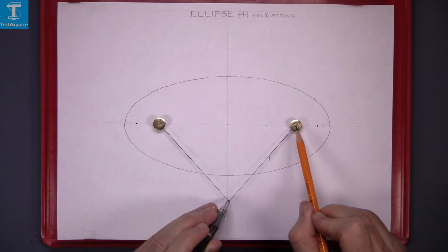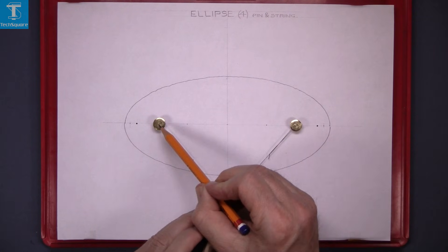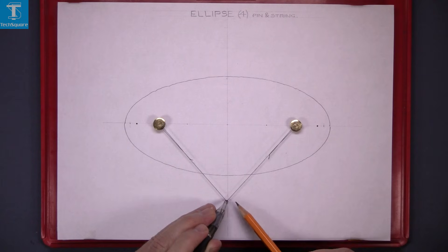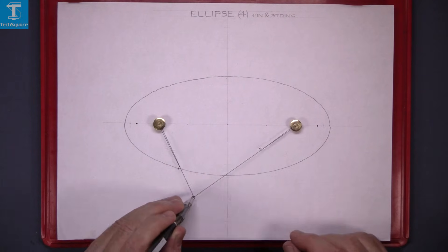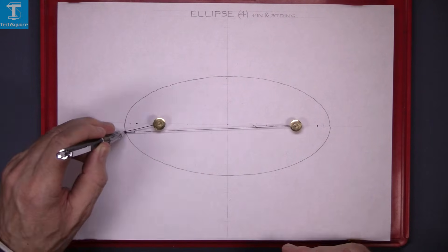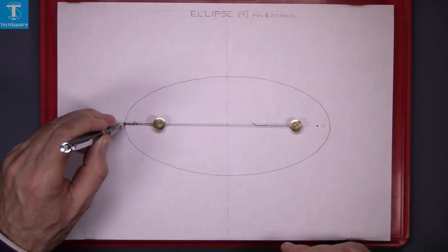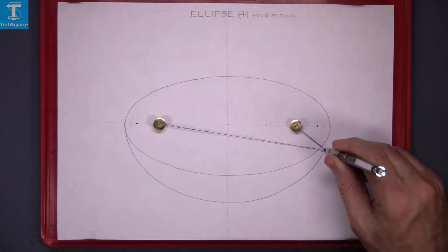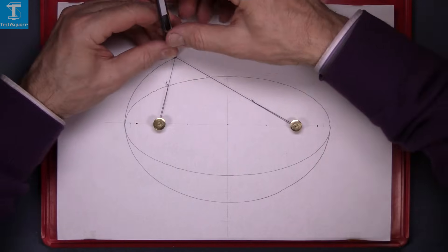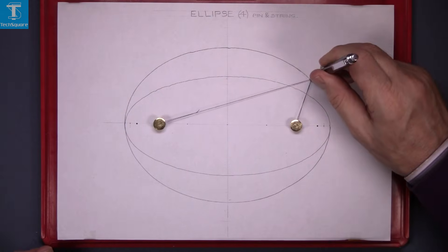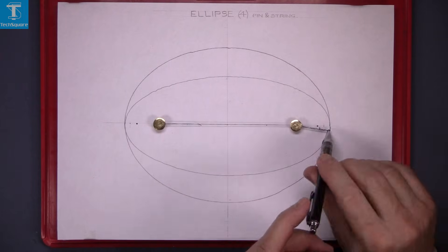I have moved the pins in about 10mm. Now the string comes out further, so the ellipse is going to be wider - same length but wider. Now that's one half of it and the top half, and that's another ellipse done.